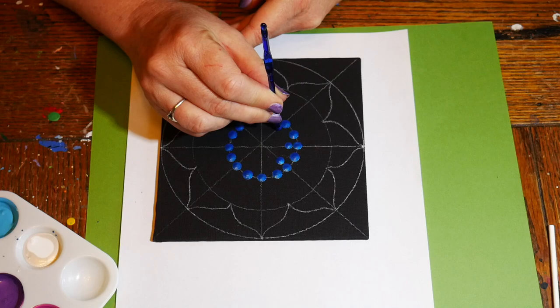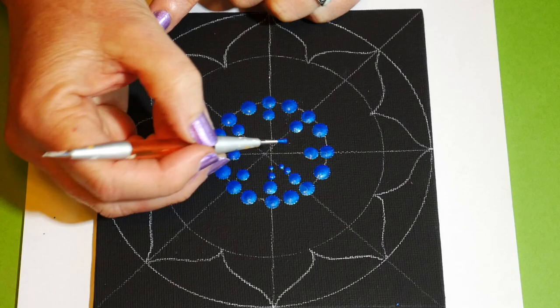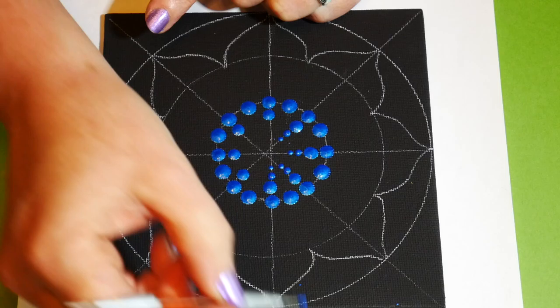Wipe that off on a damp paper towel. Now I'm going to be walking those dots toward the center. I'm using the next smallest tool and then my manicure stylus to get even smaller dots, just making your eye draw in toward the center of this design.